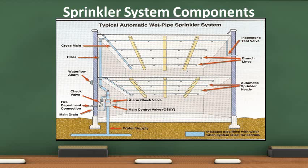On the inlet side, the fire department connection allows the fire department to pump additional water into the sprinkler system. The check valve ensures water flows in only one direction.